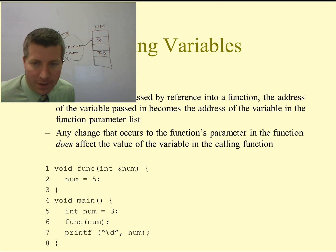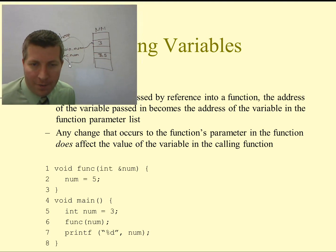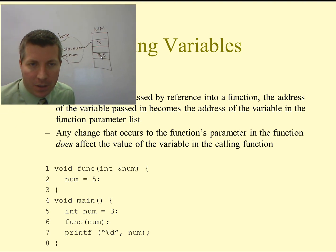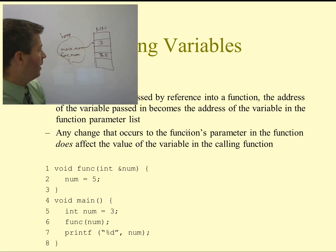Now, passing a variable by reference is something else that we are able to do. When we pass a variable by reference — we haven't seen this before — we put an ampersand in the parameter list of the function. What that means is that when a variable is passed into that function, this variable is going to point at the same location in memory as the original variable. Let's look at the example again.